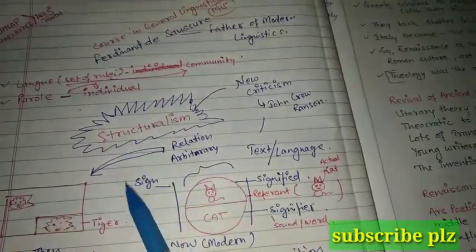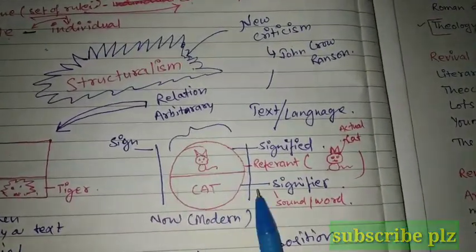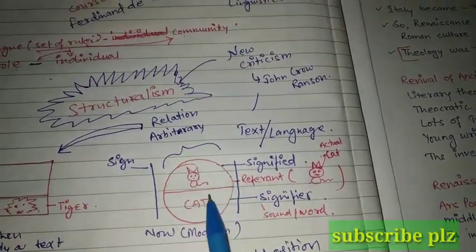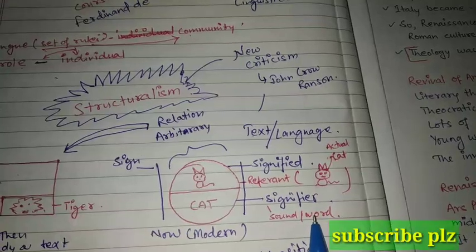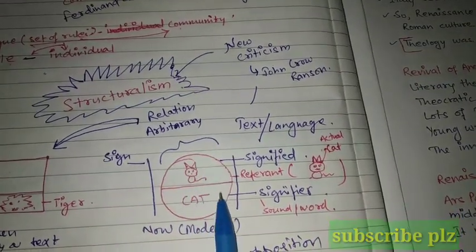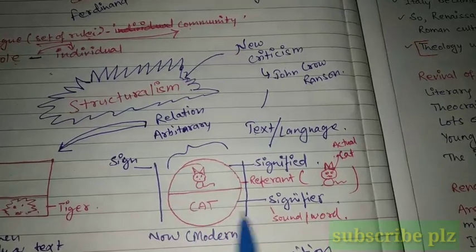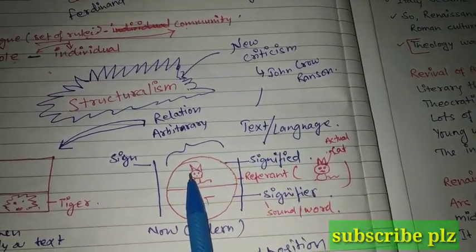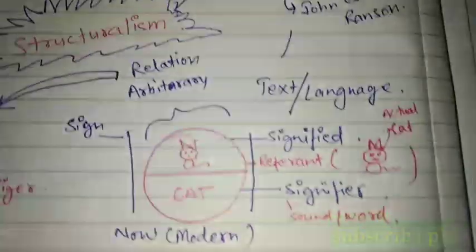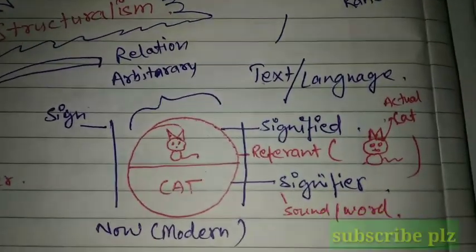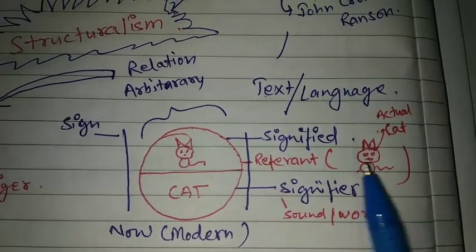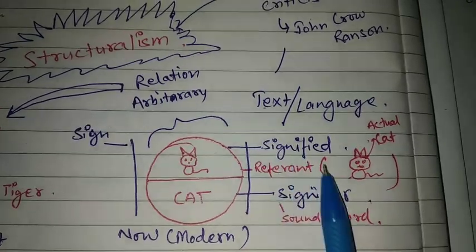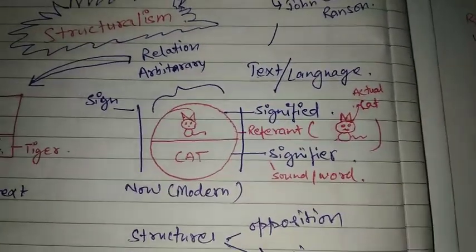Let's talk about sign first. Sign is a combination of two things: signified and signifier. Signifier is a sound or word, and signified is the thing it signifies. Then the third thing in this scenario is the referent. Referent is the actual thing — like I have used the example of 'cat', so the actual cat is the referent.